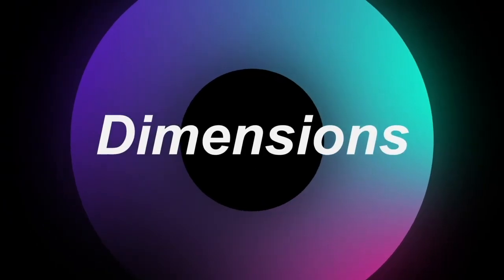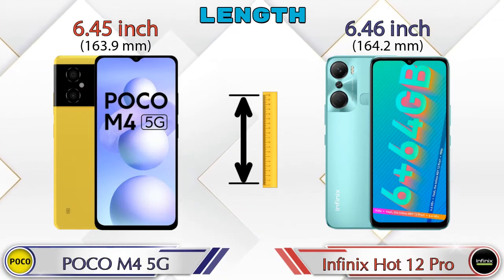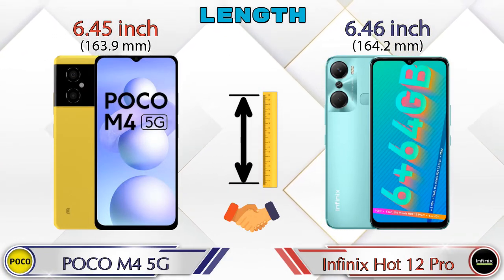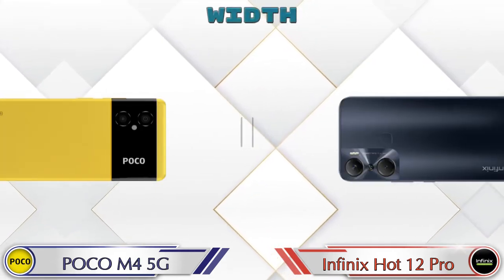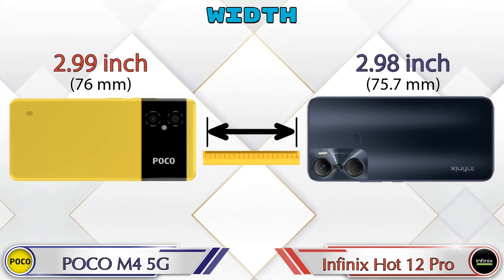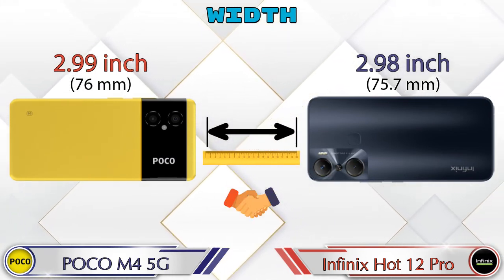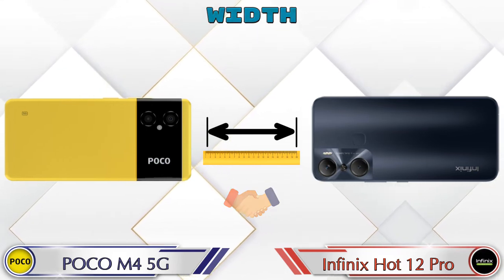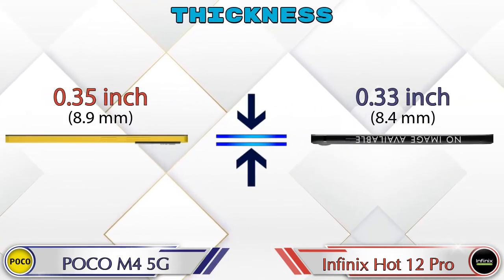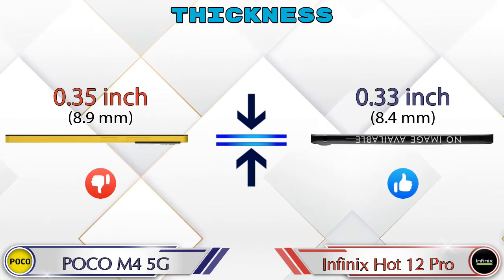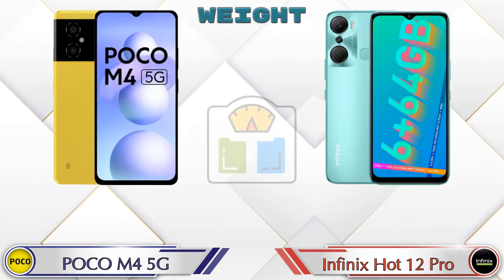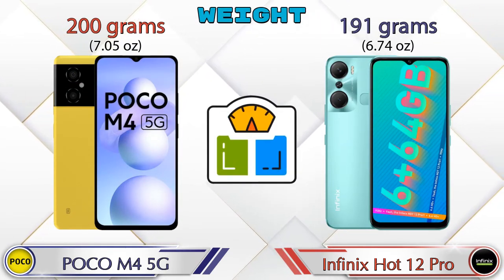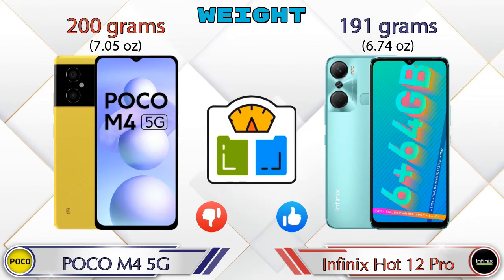Checking the dimensions: the length of the M4 5G is 6.45 inches and the Hot 12 Pro is 6.46 inches — almost the same. Width is 2.99 inches on the M4 5G and 2.98 inches on the Hot 12 Pro, also nearly identical. Thickness is 0.35 inches on the M4 5G and 0.33 inches on the Hot 12 Pro. Weight is 200 grams for the M4 5G and 191 grams for the Hot 12 Pro.